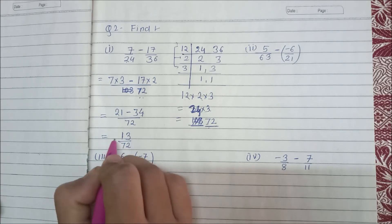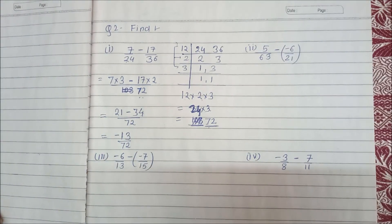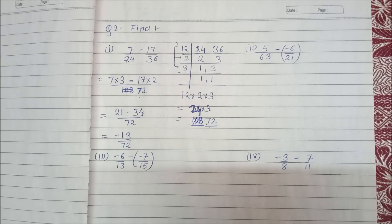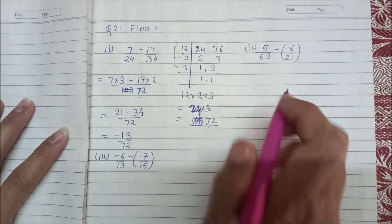And the sign will be minus because the sign will be of the big number, right? So here we will get minus 13 upon 72. So this is our answer for the subtraction.